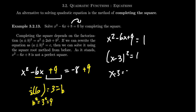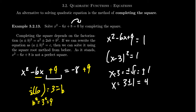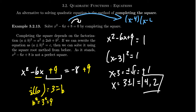We get x minus 3 equals plus or minus the square root of 1. The square root of 1 is 1 itself, so you get plus or minus 1. And thus, x equals 3 plus or minus 1, which gives us 4 and 2 — that is, 3 plus 1 is 4 and 3 minus 1 is 2. Those are the solutions to this equation. I want to confess that if we look at the original equation, we could have actually factored this — we could have solved it by factoring. Factors of 8 that add up to be negative 6: you could take (x minus 4)(x minus 2) equals 0, giving x equals 4 and 2.